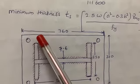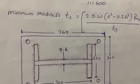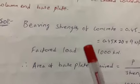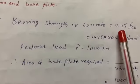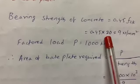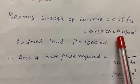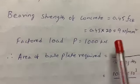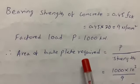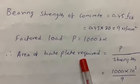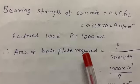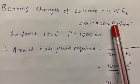First we need to calculate the bearing strength of the concrete, which is 0.45 × f_ck. Since f_ck is 20 for M20 concrete, the bearing strength is 9 N/mm². The given load is 1000 kN and we need to calculate the required area of the base plate, which is P divided by strength: 1000 divided by 9.